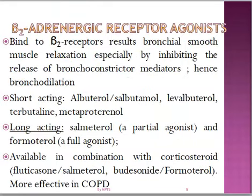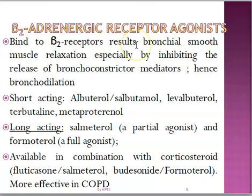Which agents are used in the management of asthma? The common ones are the beta-2 adrenoceptor agonists. They bind to beta-2 receptors located in bronchial smooth muscle and result in smooth muscle relaxation. They also inhibit the release of bronchoconstrictor mediators, leading to bronchodilation.